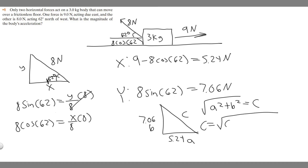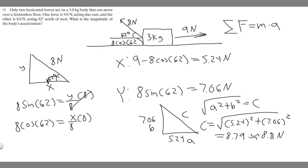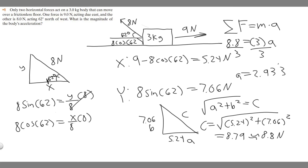So C equals the square root of 5.24 squared plus 7.06 squared. If you do that, you get 8.79, which I'll round to 8.8 newtons — that's the total net force acting on the body. Now using the sum of forces equals mass times acceleration: 8.8 equals 3 times A. Divide both sides by 3: A equals 8.8 divided by 3, which gives 2.93. Rounded to the tens place, that's 2.9 meters per second squared. So your answer is 2.9 meters per second squared.